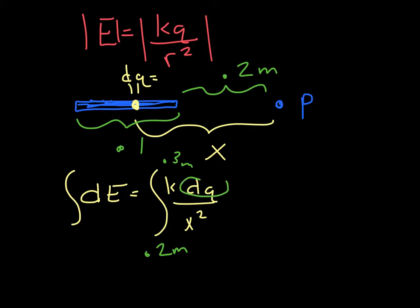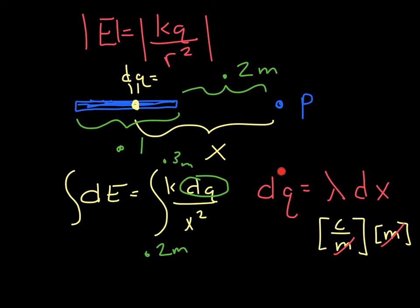And the second thing we need to look at is this dq. Now you know that it's a little bit of distance right here. So what you're going to do is replace dq with your uniform charge density. So this is coulombs per meter. If you want coulombs, you have to multiply this by meters so that they'll cancel out and you're just left with coulombs. And the way you get a little chunk of that is you get a little piece dx, so that little piece of charge is equal to the charge density times a little chunk.